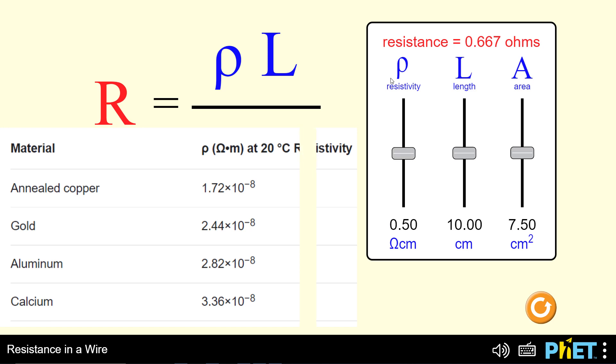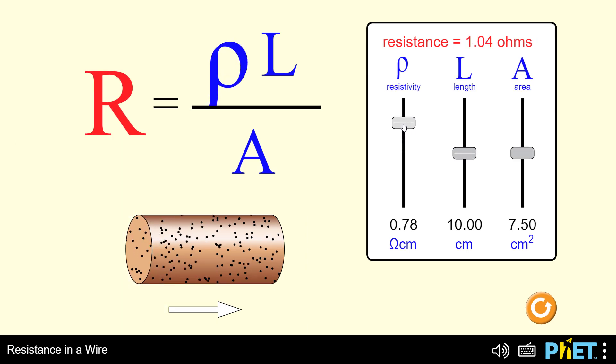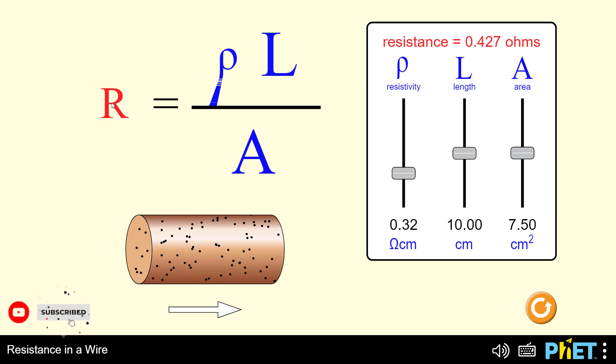Let us see the effect of the resistivity on the resistance value. If we increase the value of the resistivity, we will notice that the value of the resistance increases. As the value of the resistivity decreases, the value of the resistance decreases. The relationship between resistivity and resistance is a proportional relationship.